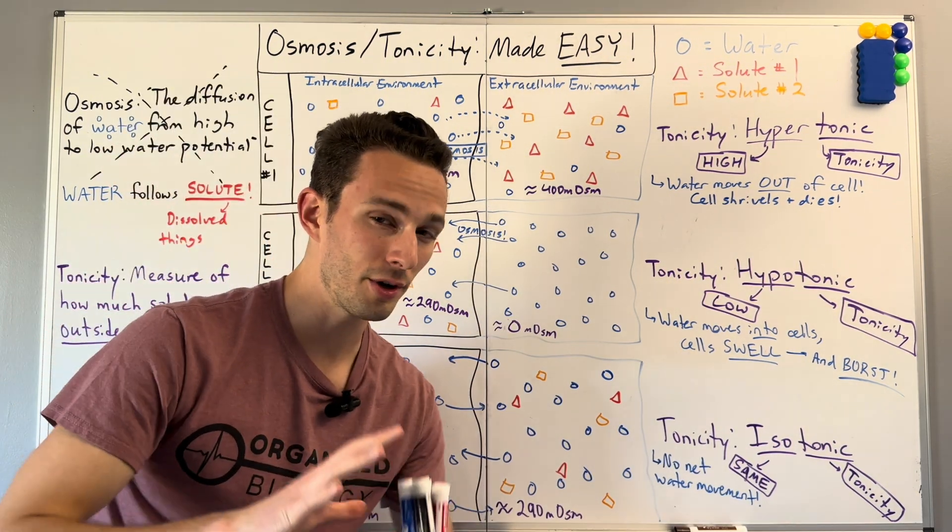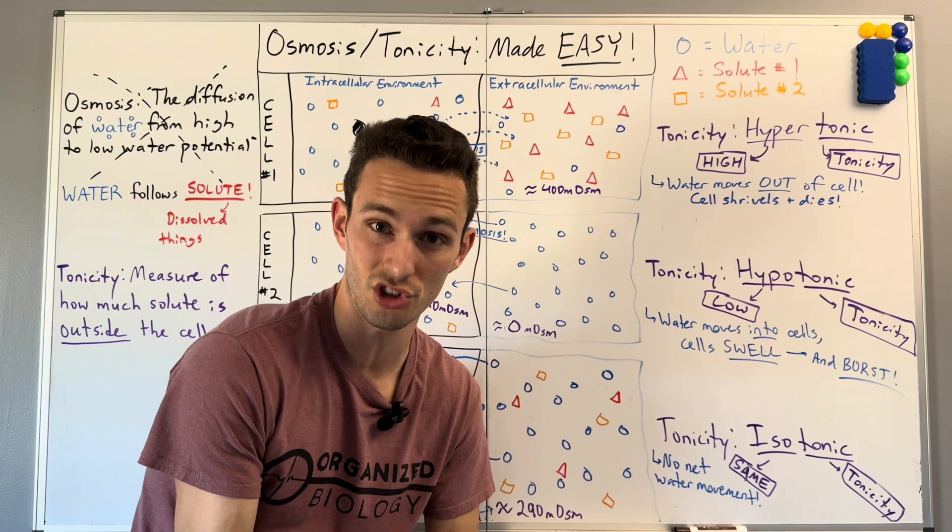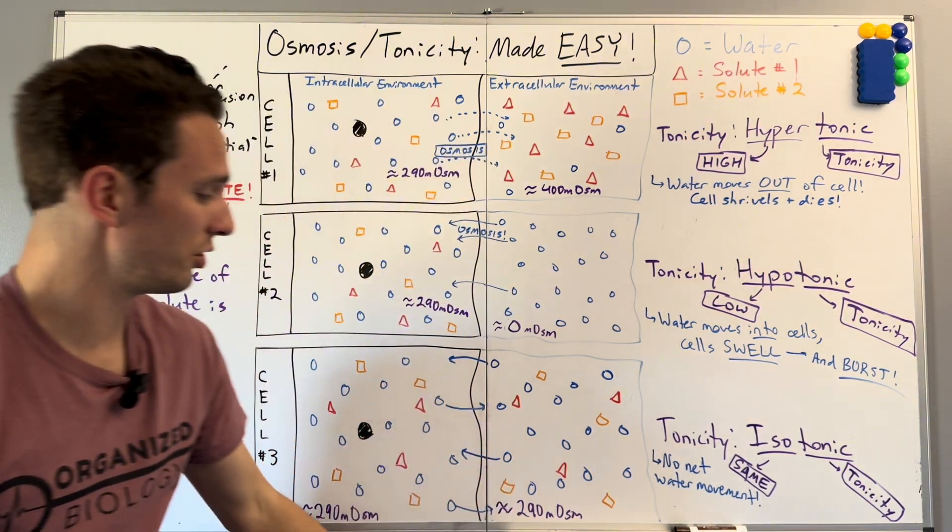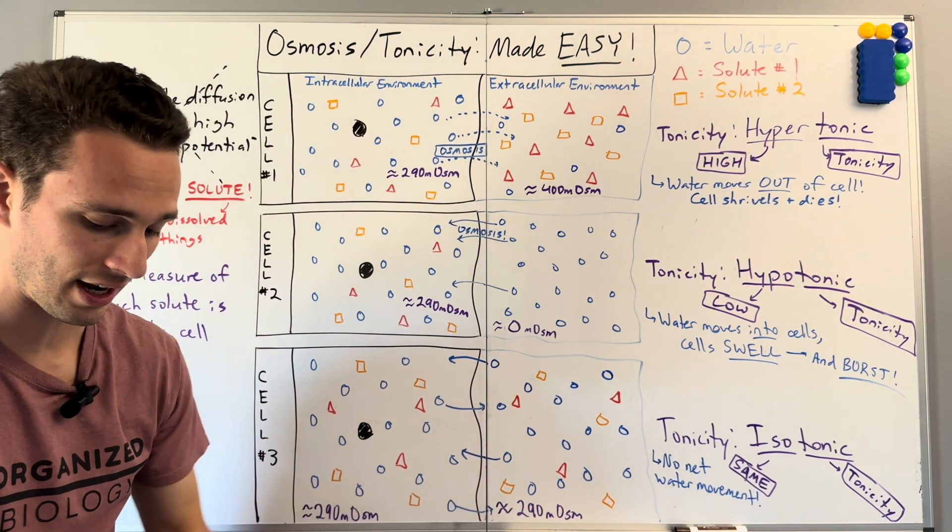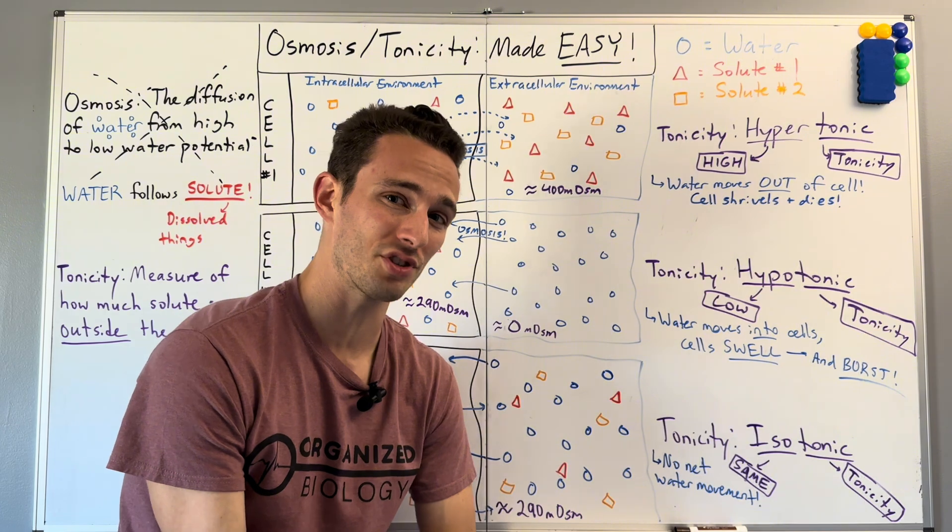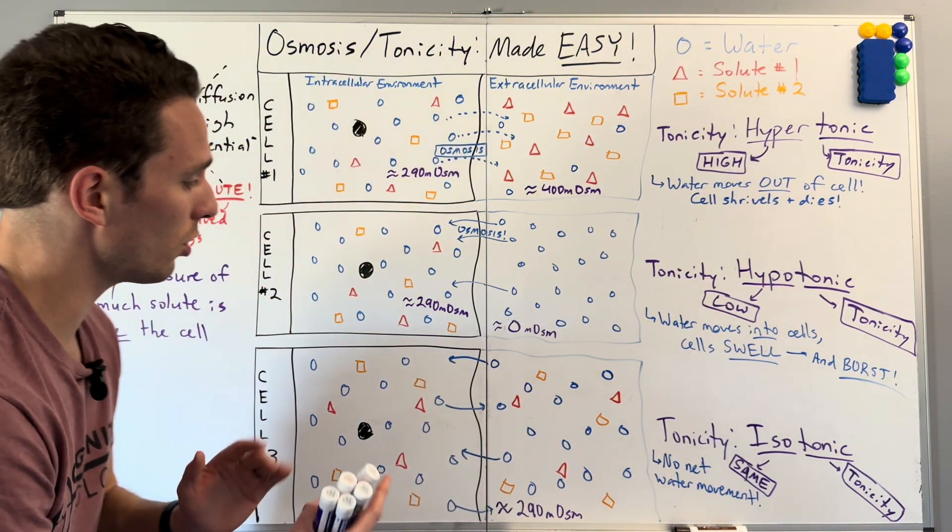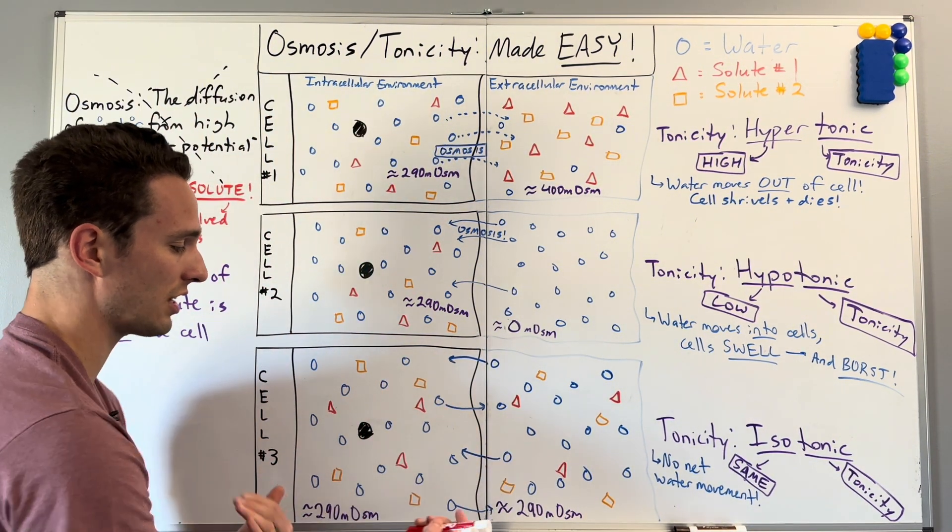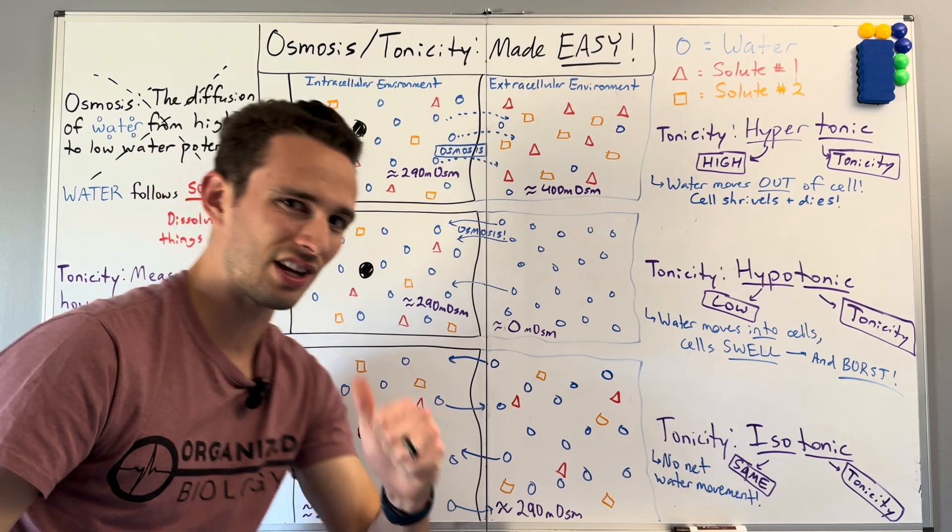So if you're going to become a nurse and you're injecting somebody with a liquid solution, you likely give them a solution that is 290 milliosmoles, usually 0.9% sodium chloride solution, so that there's no net movement in or out of the cell. The cells stay the right shape and stay the right function.